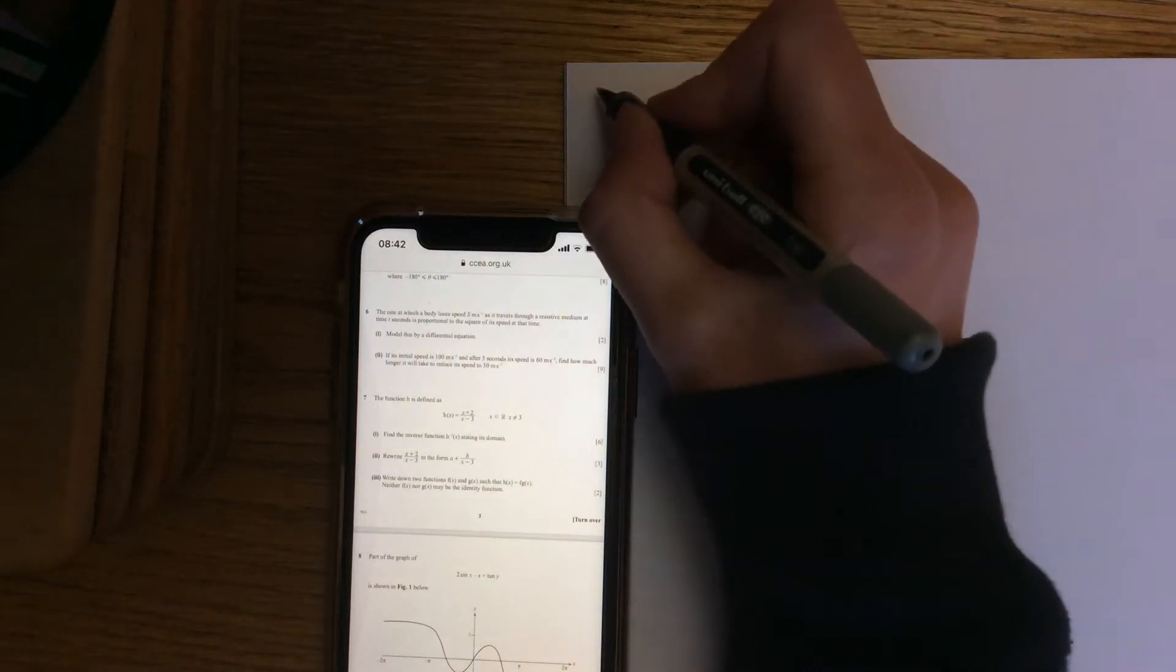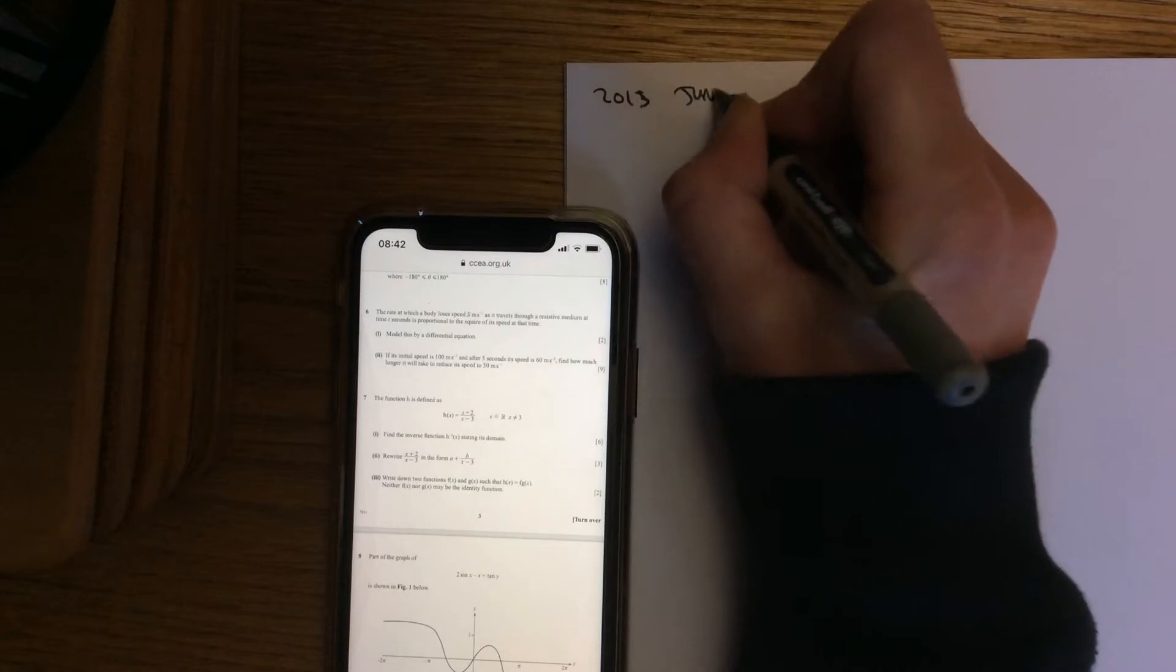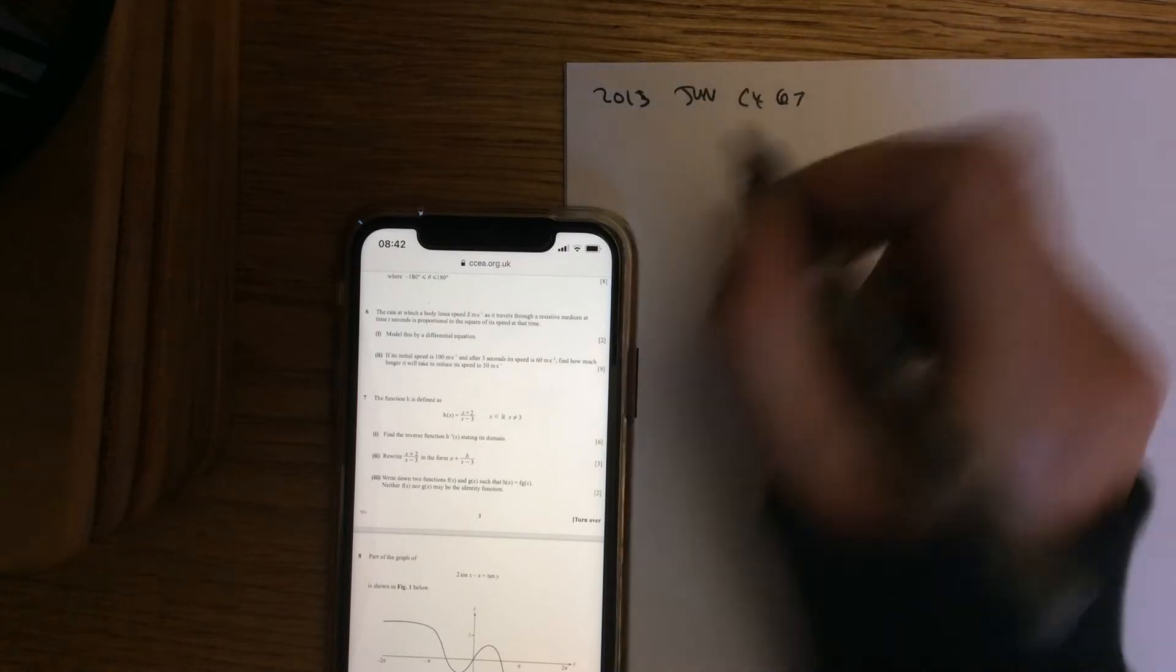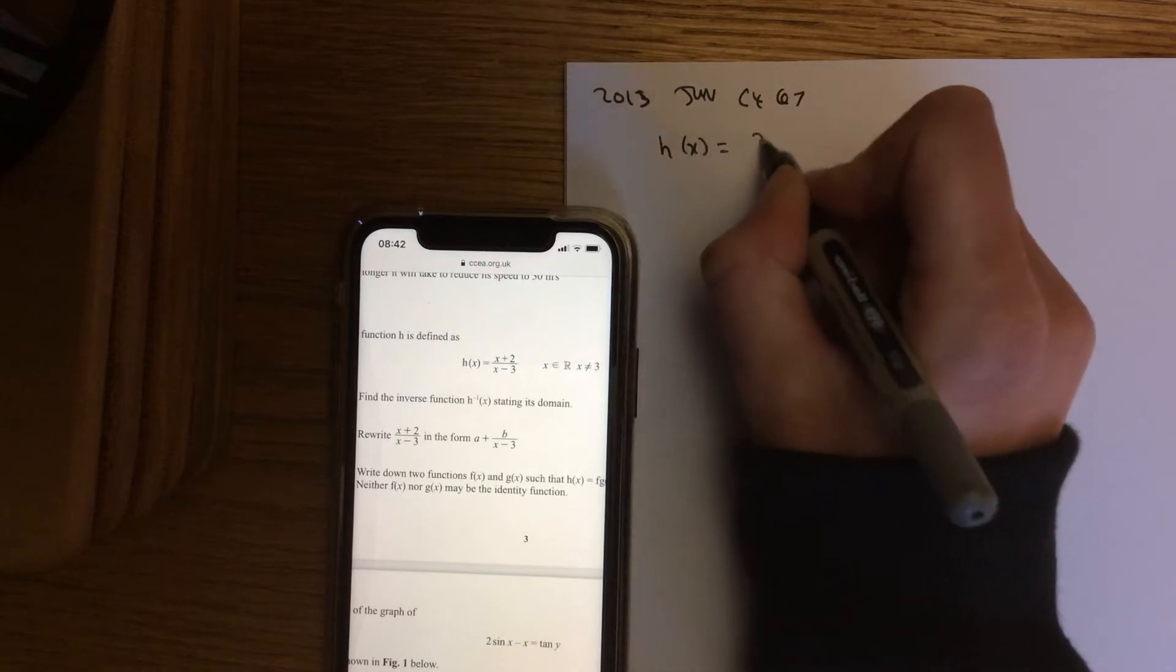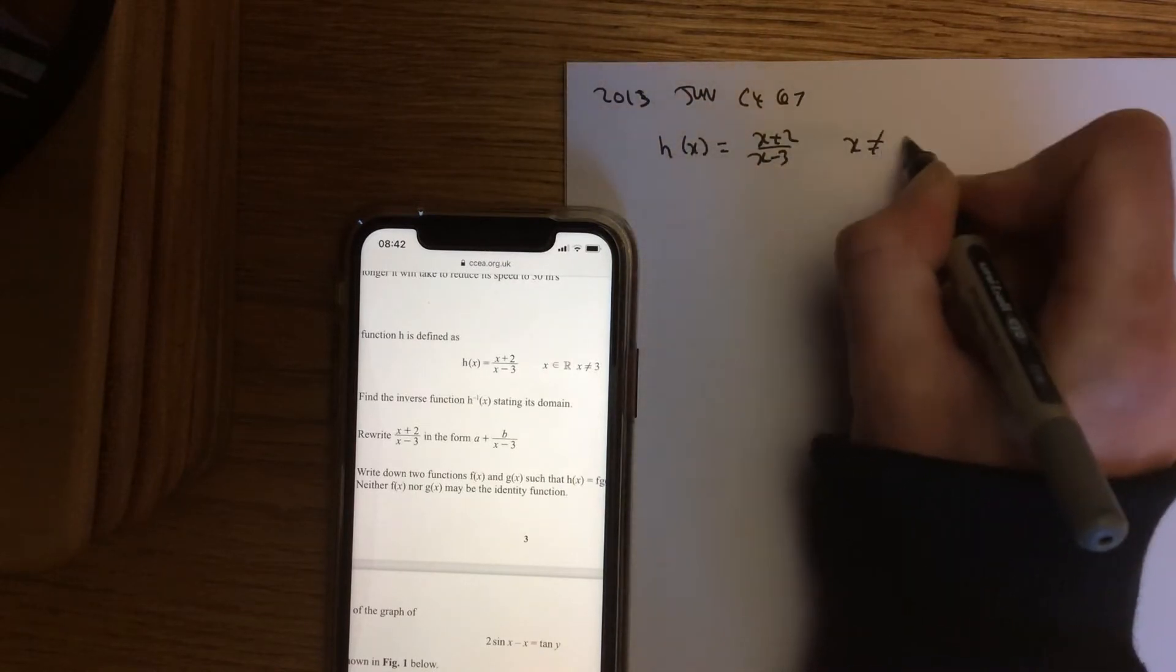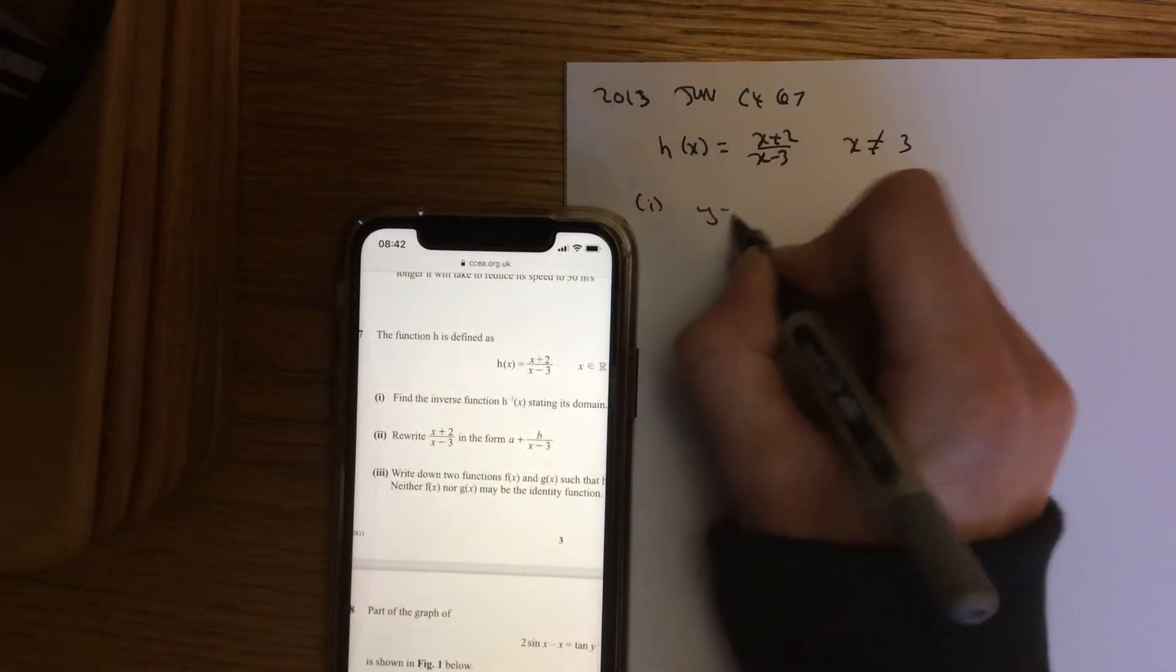Okay, we are looking at 2013 June C4 question 7. We have this function h(x) = (x+2)/(x-3), and x cannot equal 3. Part 1: find the inverse of this.